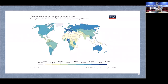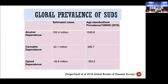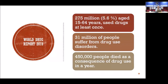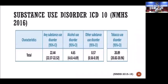Looking at global prevalence for dependence: alcohol dependence affects around 100 million people, cannabis dependence around 22 million, and opiates around 26.8 million. According to the World Drug Report, 275 million people used drugs at least once — this excludes alcohol — 31 million suffer from drug use disorder, and 450,000 people died as a consequence of drug use globally.